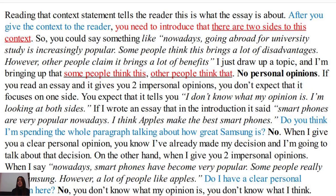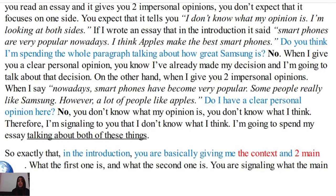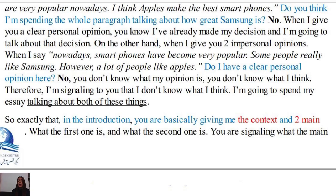If I wrote 'Smartphones are very popular nowadays — I think Apple makes the best smartphones,' do you think it's odd? Yes, because when I give you a clear personal opinion, you know I've already made my decision. On the other hand, when I say 'Nowadays smartphones have become very popular — some people really like Samsung, however a lot of people like Apple,' you have no clear personal opinion from me. I'm signaling that I'm going to spend the essay talking about both things objectively.